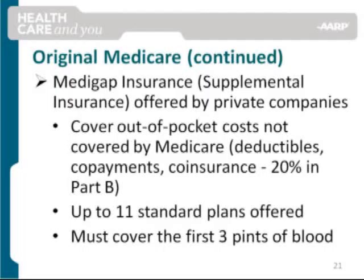Since Medicare does not cover all health care costs, some people in Original Medicare elect to purchase Medicare Supplemental Insurance, sometimes referred to as Medigap. Medigap is private health insurance that helps pay for health care services that Original Medicare does not cover, such as deductibles, co-payments, and co-insurance, which in Part B is 20% of the costs.